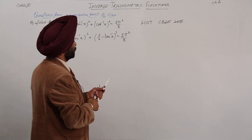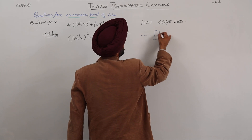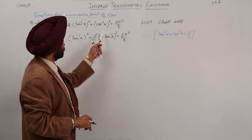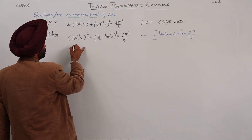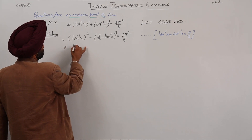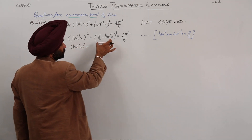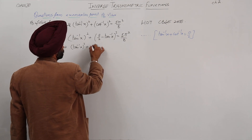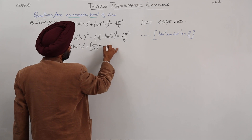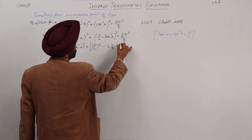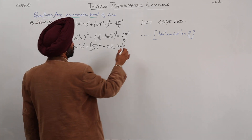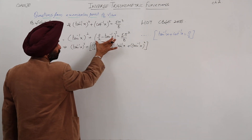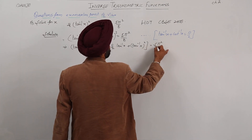Now what we have done here? We have used the identity: tan inverse x plus cot inverse x is equal to pi by 2. So we have used this identity in place of cot inverse x. This becomes tan inverse x whole square plus pi by 2 minus tan inverse x whole square, and this is equal to 5 pi square by 8.